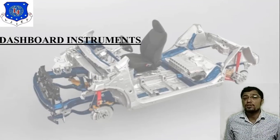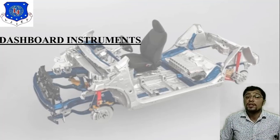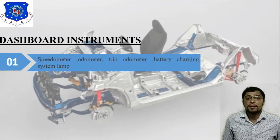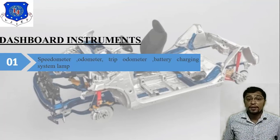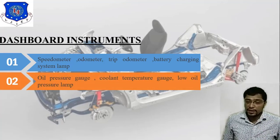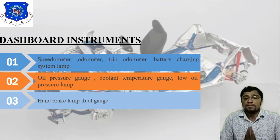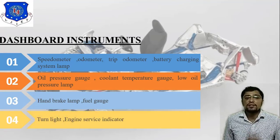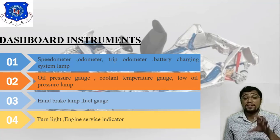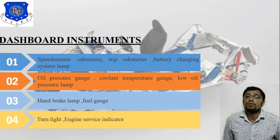The next topic is dashboard instruments. The main dashboard instruments in a vehicle include: speedometer, auto-meter (tachometer), battery charging system lamp, oil pressure gauge, coolant temperature gauge, low oil pressure lamp, hand brake lamp, fuel gauge, turn signal light, and engine service indicator.